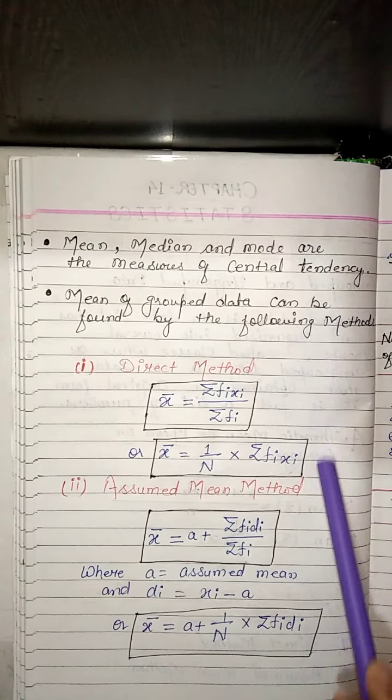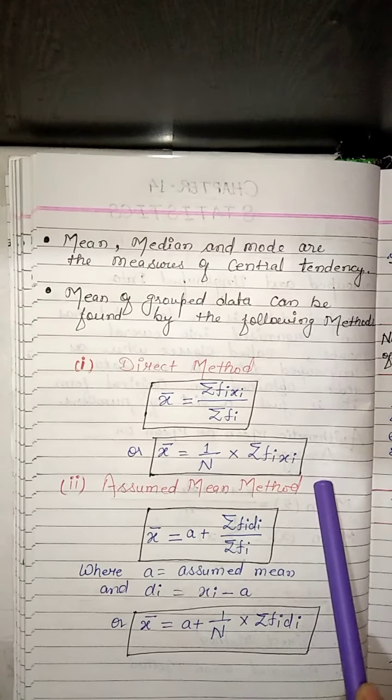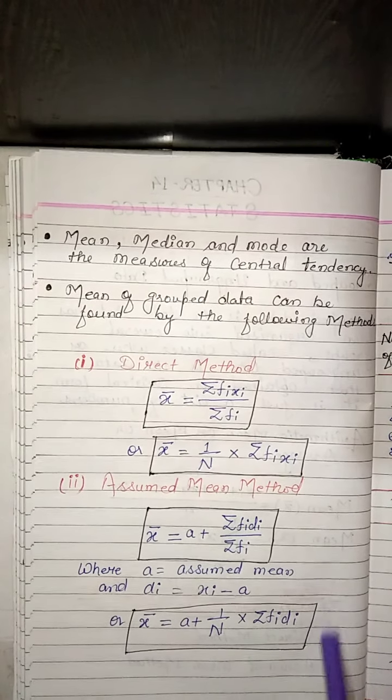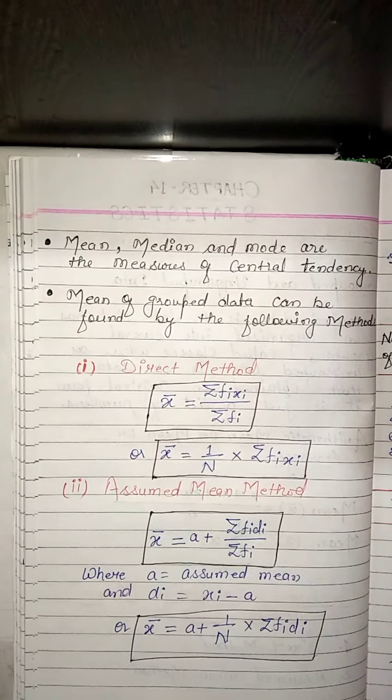So, to summarize: these are the two formulas for finding the mean using the direct method, and these are the two formulas for finding the mean using the assumed mean method.